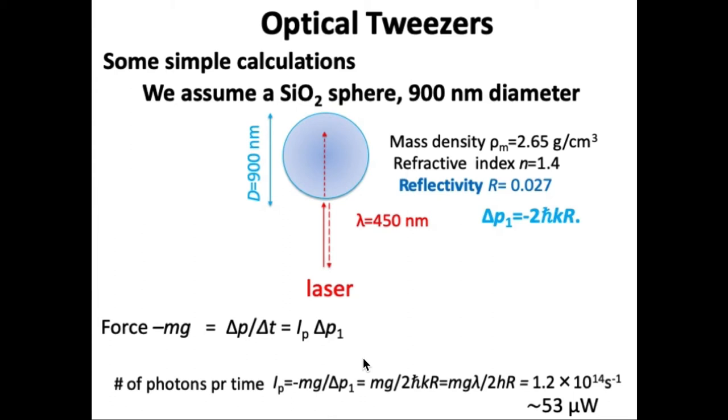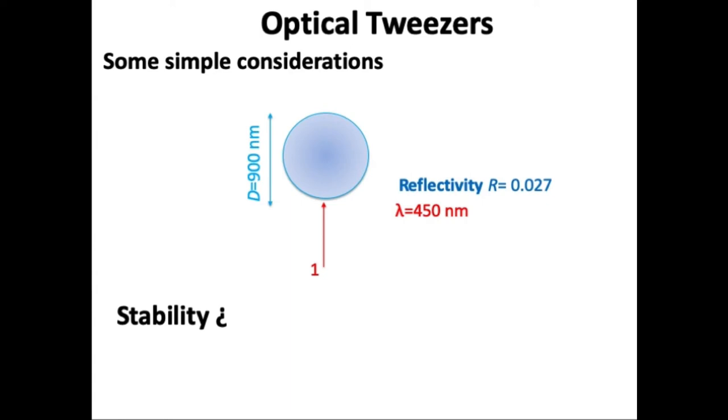We set in for delta P1, the momentum change for one photon, which was 2 h-bar k R. We set in that k equals 2 pi over lambda, the wavelength, and we have an expression we can calculate. We have the mass density and calculate the volume from the radius of the sphere. I get 10^14 photons per second. We can calculate the power of the laser. The power is energy per time unit. And we know the energy of the photon from its wavelength. I get 53 microwatts, which is not all that much. So we should be able to push that sphere sufficiently with a normal laser.